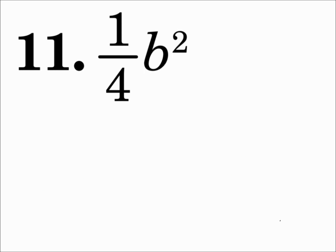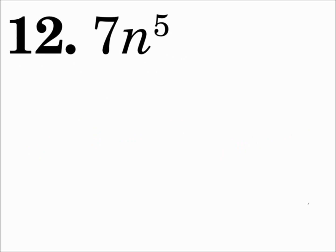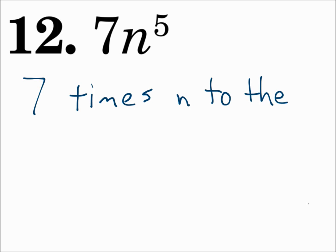Number eleven: one fourth b squared. Notice we don't always say 'times' when we read it like that, but when you write your sentence out, make sure you say the times: 'one fourth times b squared.' Number twelve: seven n to the fifth power. That's 'seven times n to the fifth power.' Remember to say 'times' when you multiply.